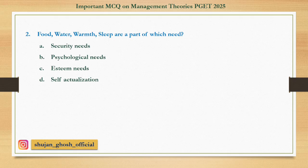Question number 2: Food, water, warmth, and sleep are part of which needs? Option A: Security needs. B: Psychological needs. C: Esteem needs. D: Self-actualization needs. Answer is Psychological needs.